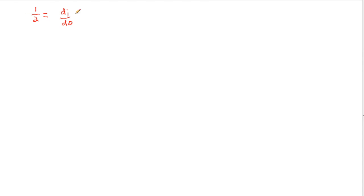So when we cross multiply, multiply both sides by do and multiply both sides by 2, then after canceling out all the cancelable variables, we end up getting do is equal to 2di.